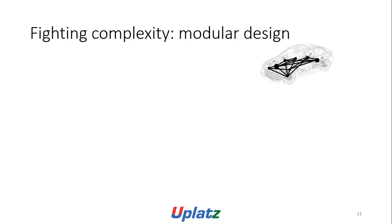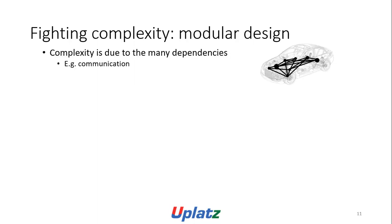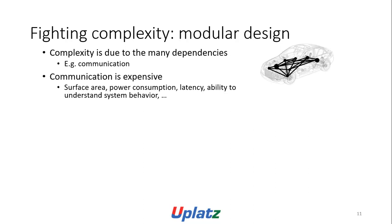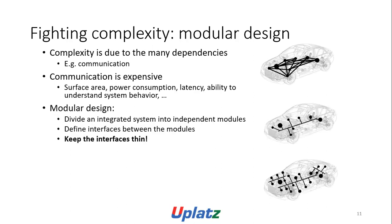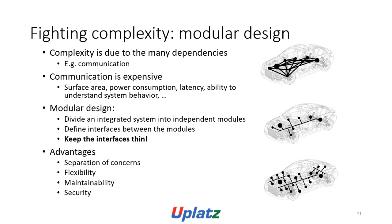Controls writing complexity and modular design: complexity is due to many dependencies — for example, communication. Communication involves surface area, power consumption, latency, and ability to understand system behavior. Modular design divides and integrates the system into independent modules with interfaces; keeping the interfaces thin has the same advantages of separation of concern and security.